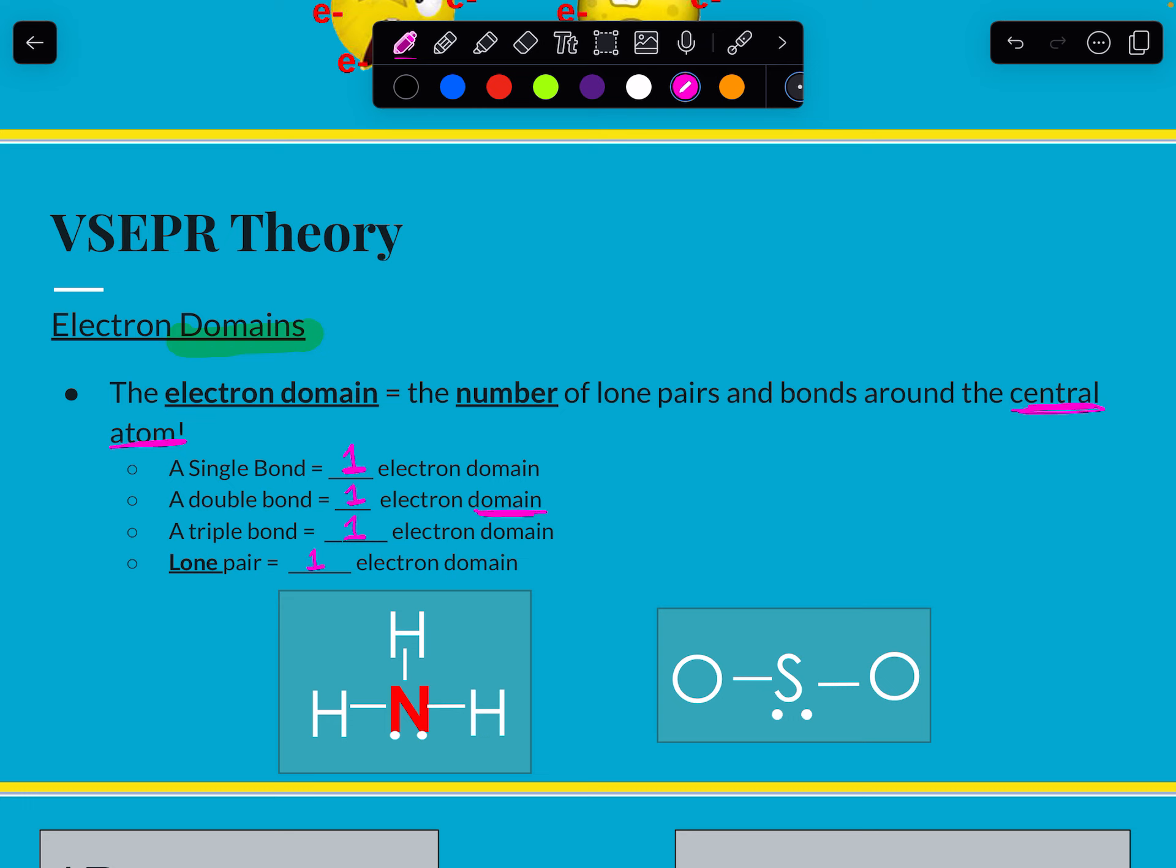So to give you an example here, if I'm looking at this structure, it would have one, two, three, four total domains, three bonding, one lone pair domain.